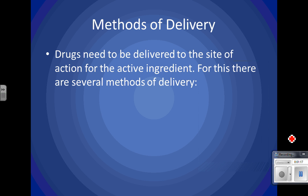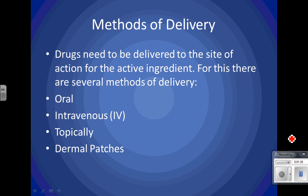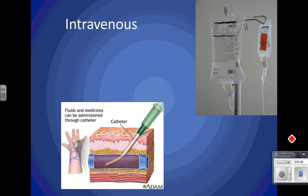The drug — the medication — needs to get to where it's active: the active site. And the active ingredient is what needs to get there. There are several methods of delivery: oral, which is the main one we'll focus on; intravenous, the IV; topically; dermal patches; and subdermal implants.